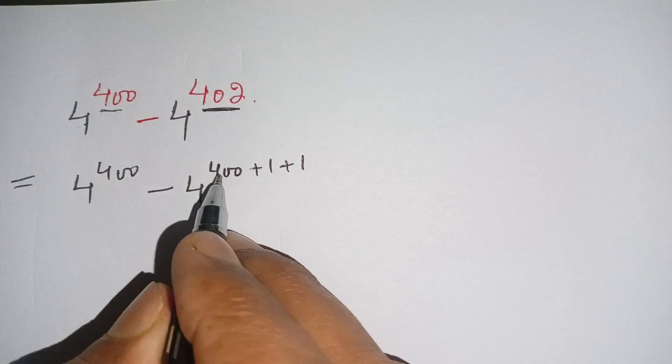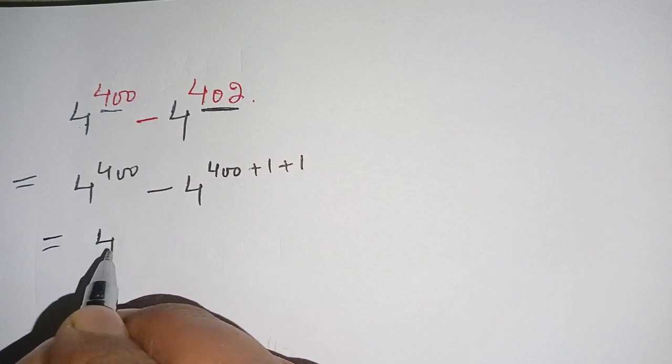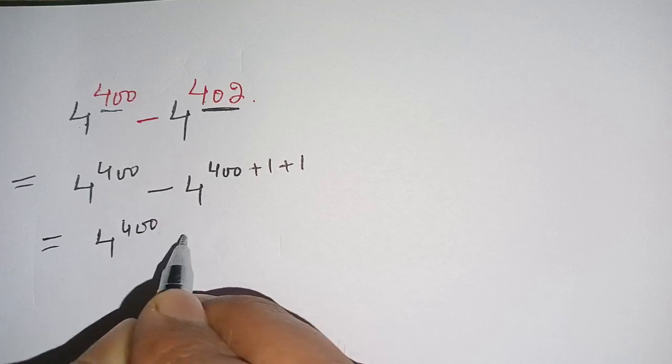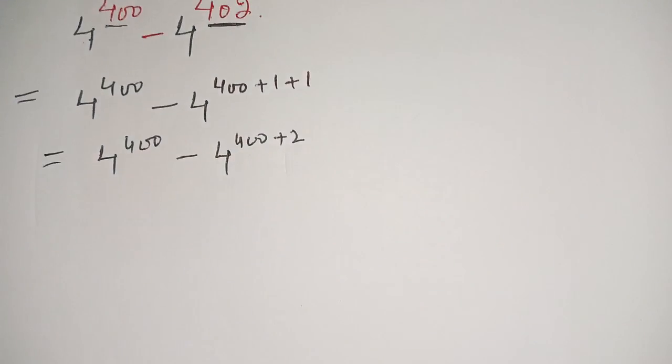400 plus 1 plus 1 equals 402. Now we can write this as 4 power 400 minus 4 power 400 plus 2.